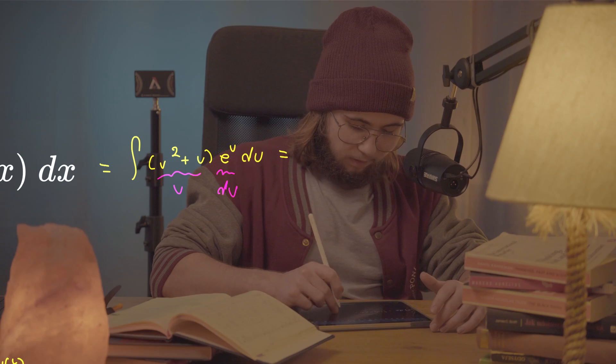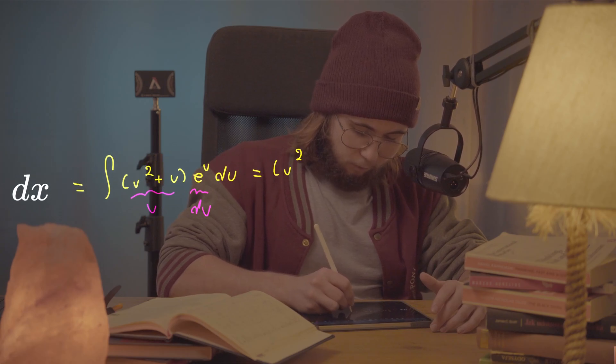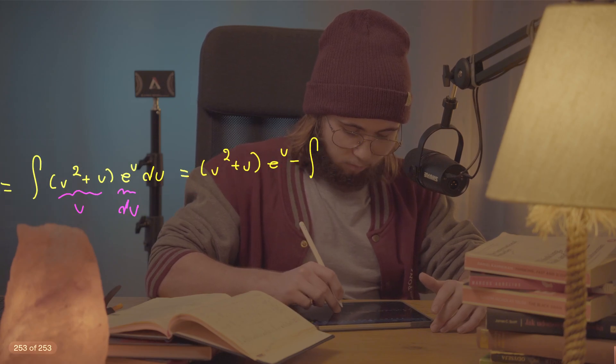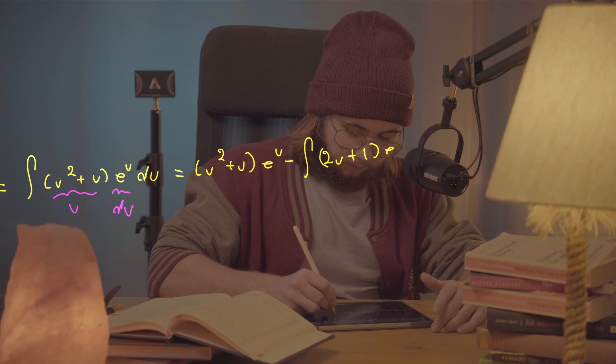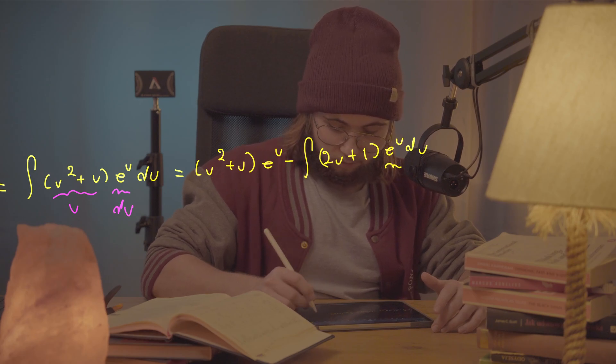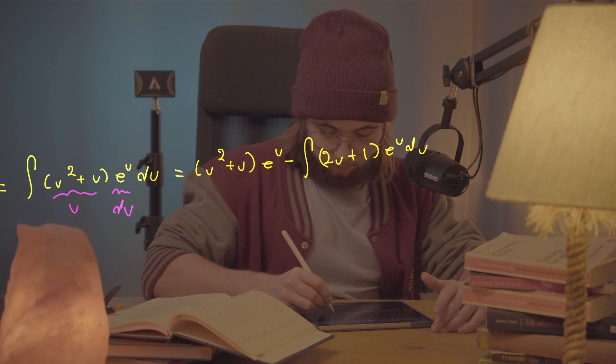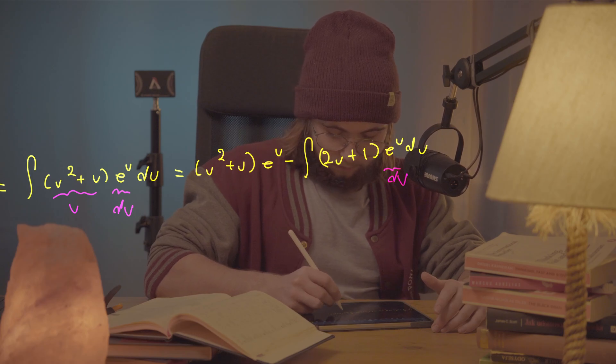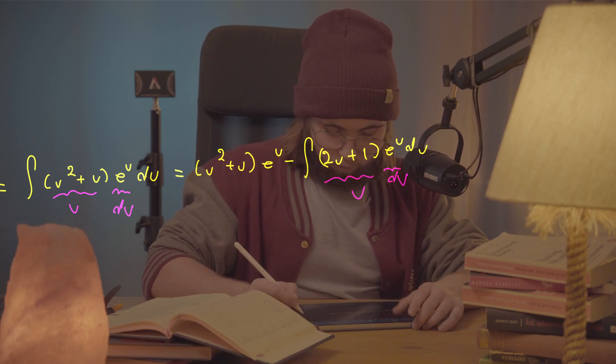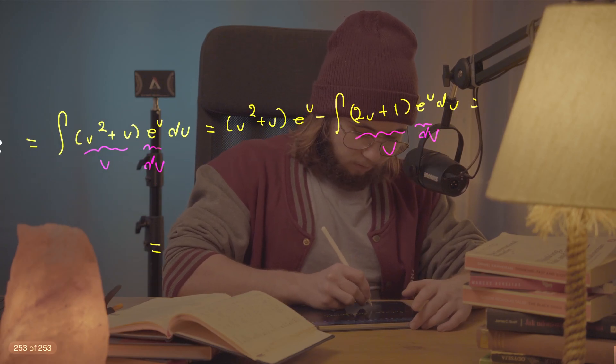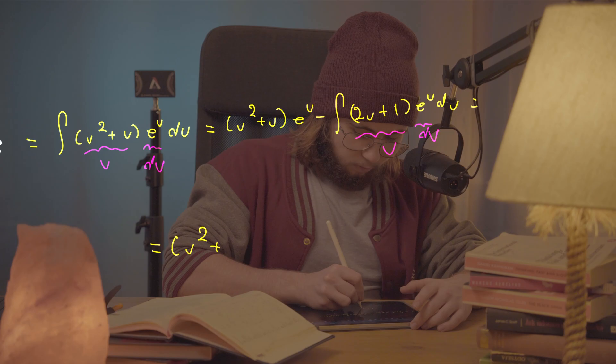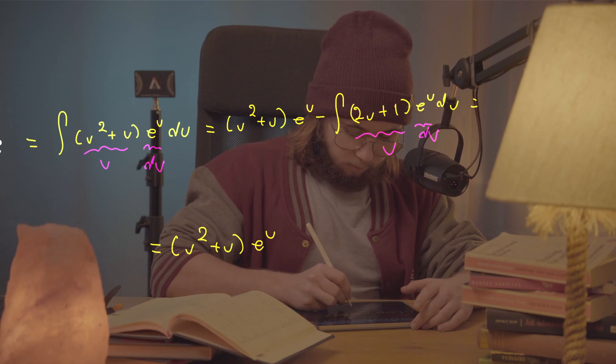And so I'm gonna get after doing that is first of all, u squared plus u times e to the u minus the integral of two u plus one multiplied by e to the u du. Once again, the exponential becomes the d v. This thing here becomes my u. Now once again,